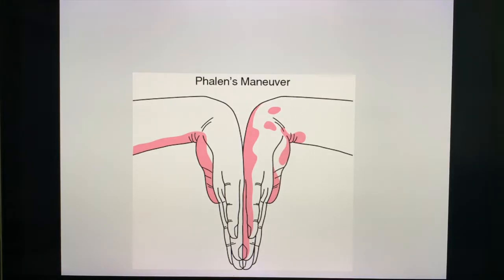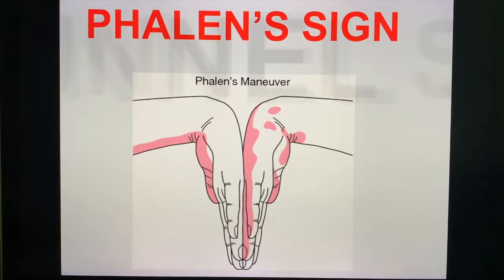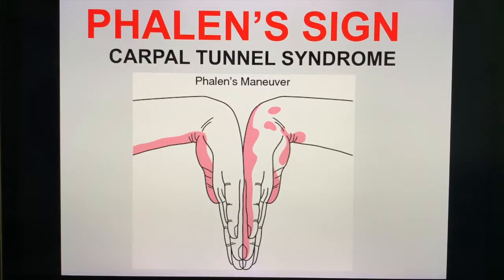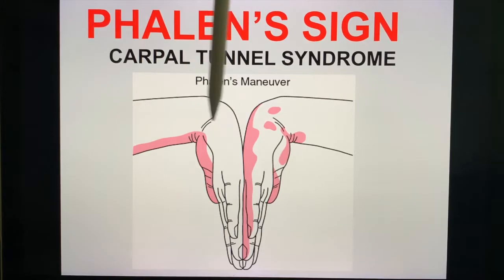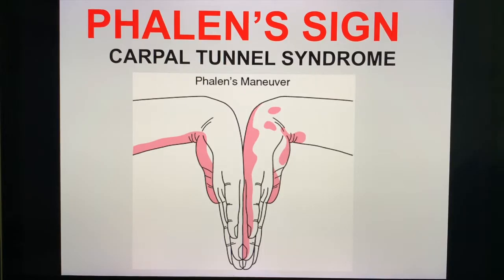Another means to diagnose carpal tunnel syndrome at the bedside is the Phalen sign. When you flex both wrists and press them against each other, you get the same manifestations of pain, tingling, and paresthesias in the distribution of the median nerve — the thumb, the index finger, the middle finger, and half of the ring finger. This is diagnostic of carpal tunnel syndrome.